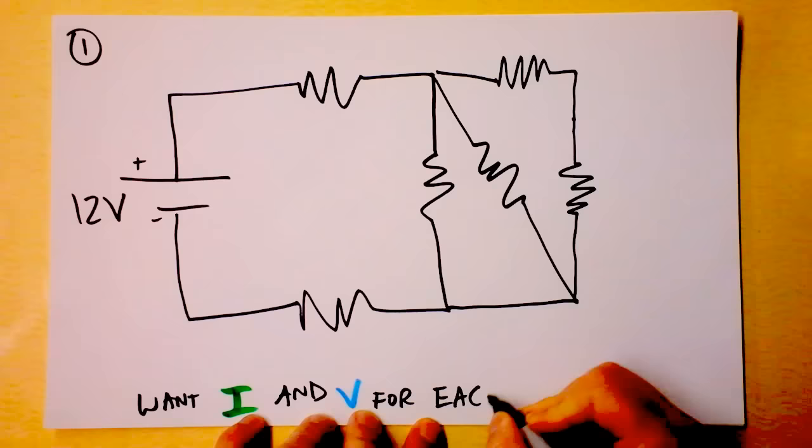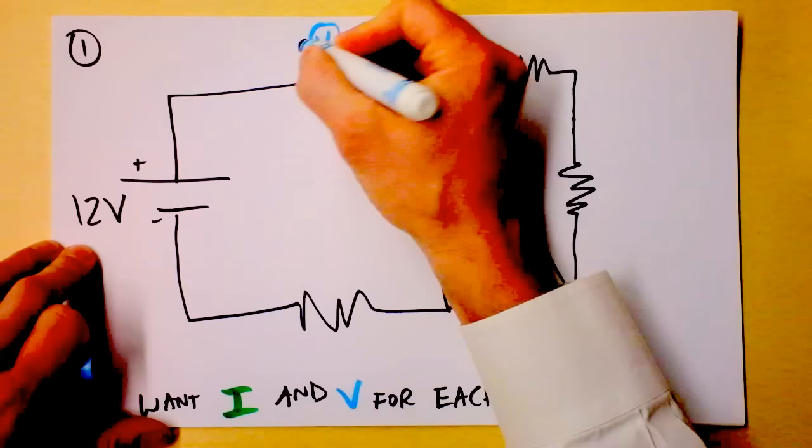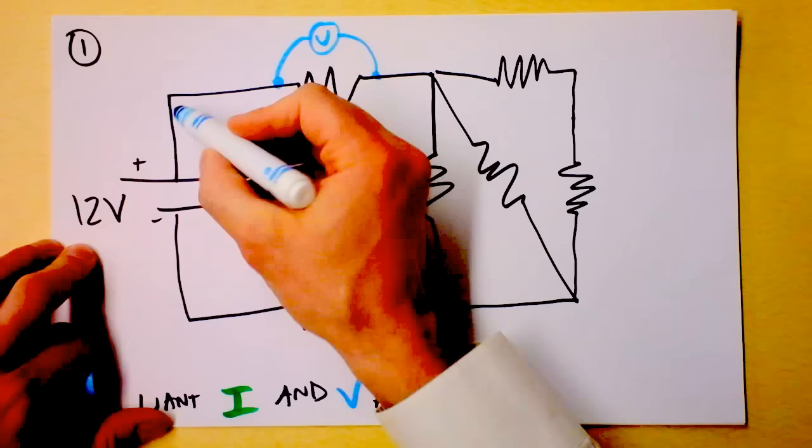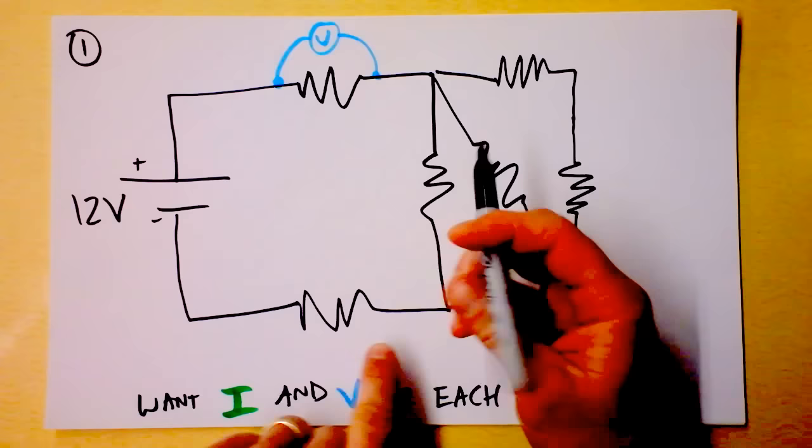So that's the language that we use. The current goes through a resistor and the voltage is across a resistor. Voltmeters would come on here like this — here's the voltmeter that connects like that. Because an ideal voltmeter has infinite resistance and no current. Given the choice, the current sees infinite resistance or some finite resistance, and it chooses to go through the resistor.